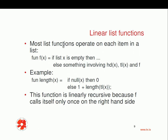Let's look at some examples of list functions. Most list functions operate on each item in a list. For example, let's assume we have a function f that takes an argument x. It has a base case — if the list x is empty, then we do something. Otherwise, we have a recursive case which does something involving the head of the list, the tail of the list, and the function f itself — so we're calling f recursively.